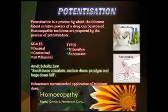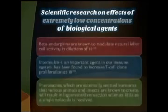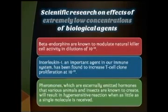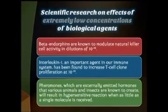Some highly respected basic scientific research has begun to verify the claims that homeopaths have made for 200 years — that various extremely low concentrations of biological agents can exhibit powerful biochemical effects. Beta endorphins are known to modulate natural killer cell activity in dilutions of 10⁻¹⁸. Interleukin-1, an important agent in our immune system, has been found to increase T-cell clone proliferation at 10⁻¹⁹. Pheromones will result in hypersensitive reactions when as little as a single molecule is received.